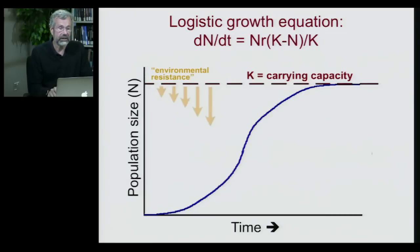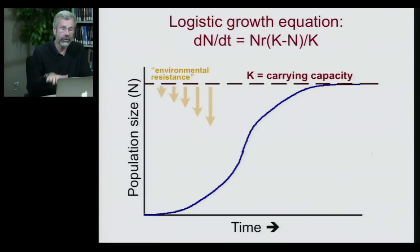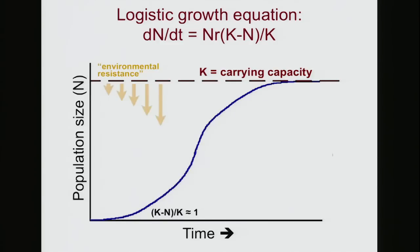Looking at this graphically, we have the logistic growth equation where the change in population through time equals n times r times (K minus n)/K. As the population grows, it approaches this upper limit — the carrying capacity K — and the environmental resistance to further population growth gets stronger and stronger. At very low population densities, K minus n is essentially K, so this term is one and population growth is more or less exponential. But as we approach the carrying capacity, this term approaches zero and the further increment of growth goes to zero — population growth halts.